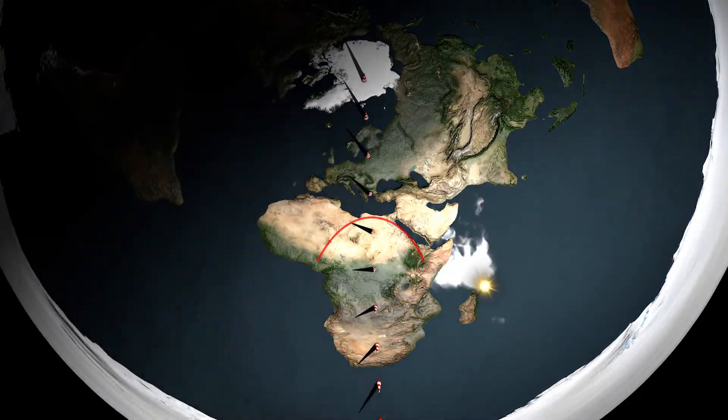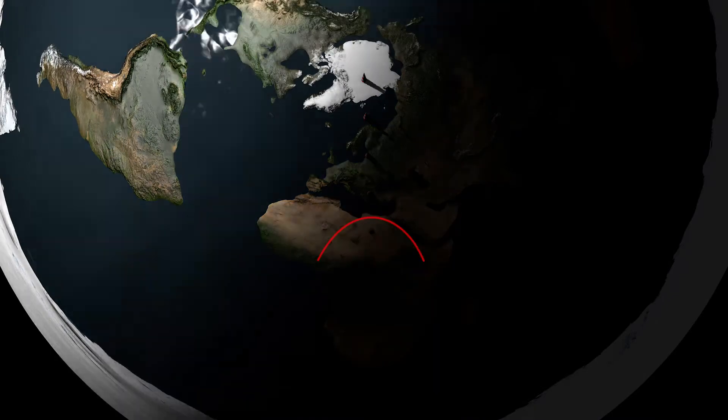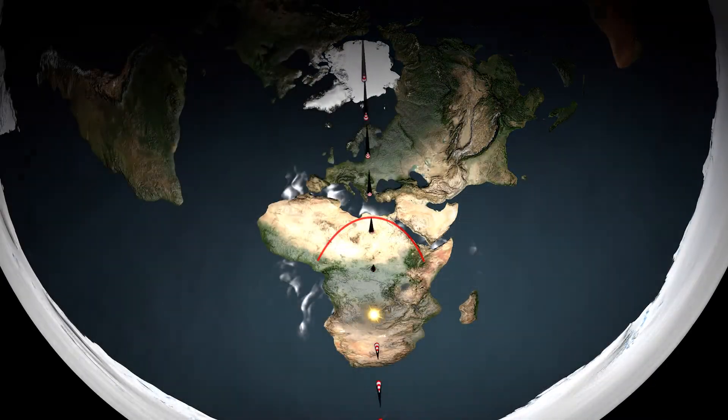So Flat Earthers, you have yet to explain how shadows can move in a straight line if the Sun doesn't.